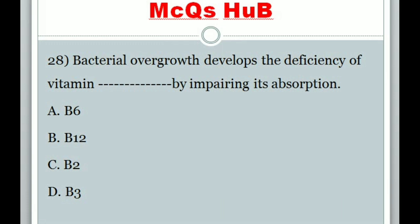Question 28: Bacterial overgrowth develops the deficiency of which vitamin by impairing its absorption? Answer B: B12.